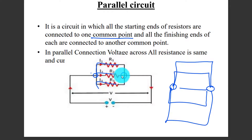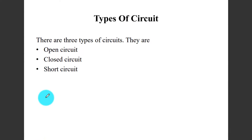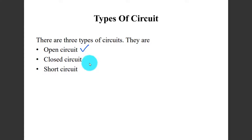In a parallel connection, the voltage across all the resistances is the same, while the current divides. Now let us look at types of circuits: open circuit, close circuit, and short circuit.